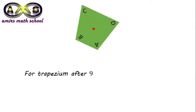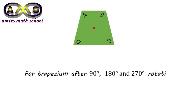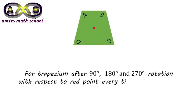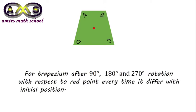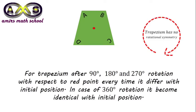For a trapezium, after 90 degree, 180 degree, and 270 degree rotation with respect to the red point, every time it differs with the initial position. In case of 360 degree rotation, it becomes identical with the initial position. So, trapezium has no rotational symmetry.